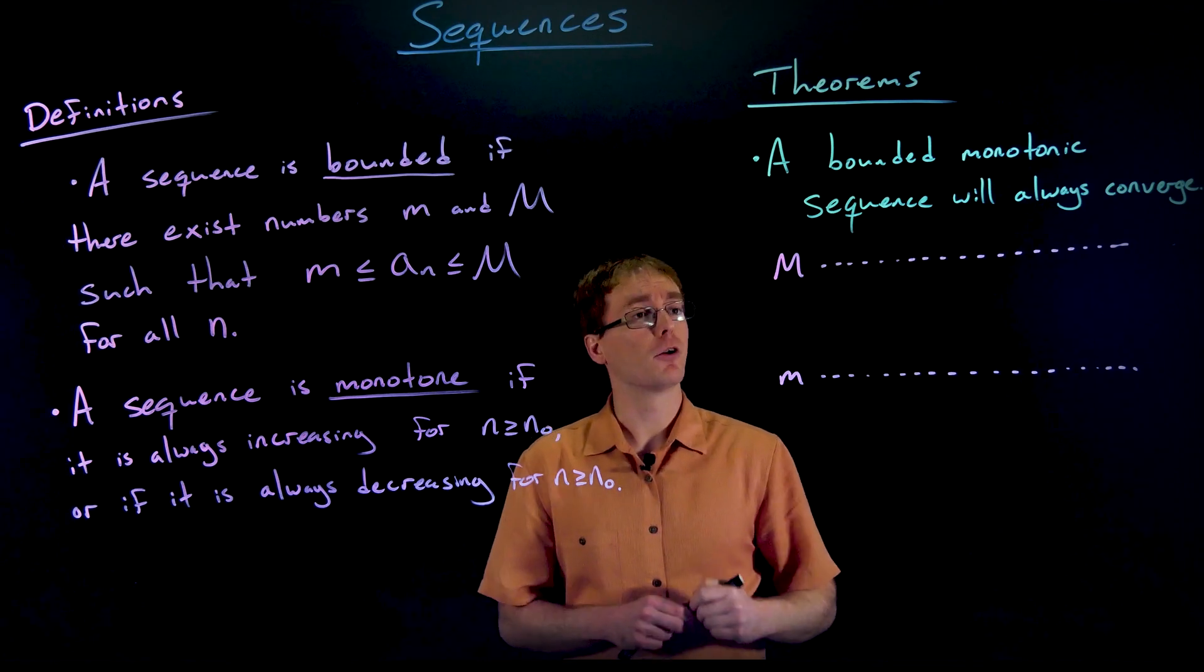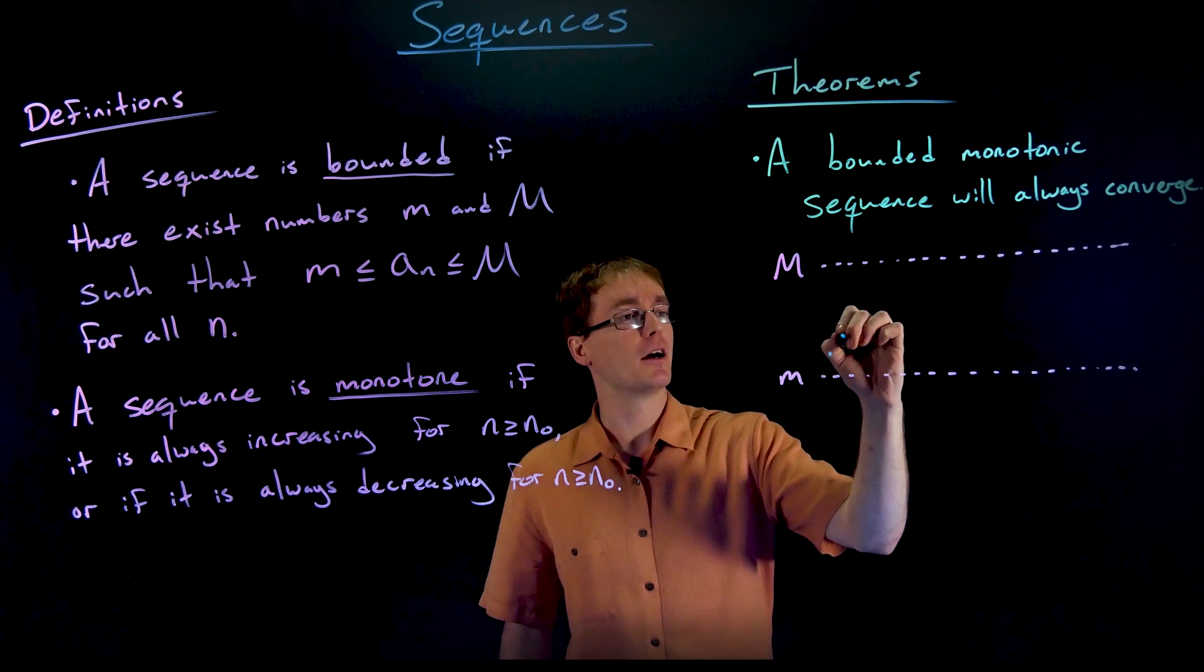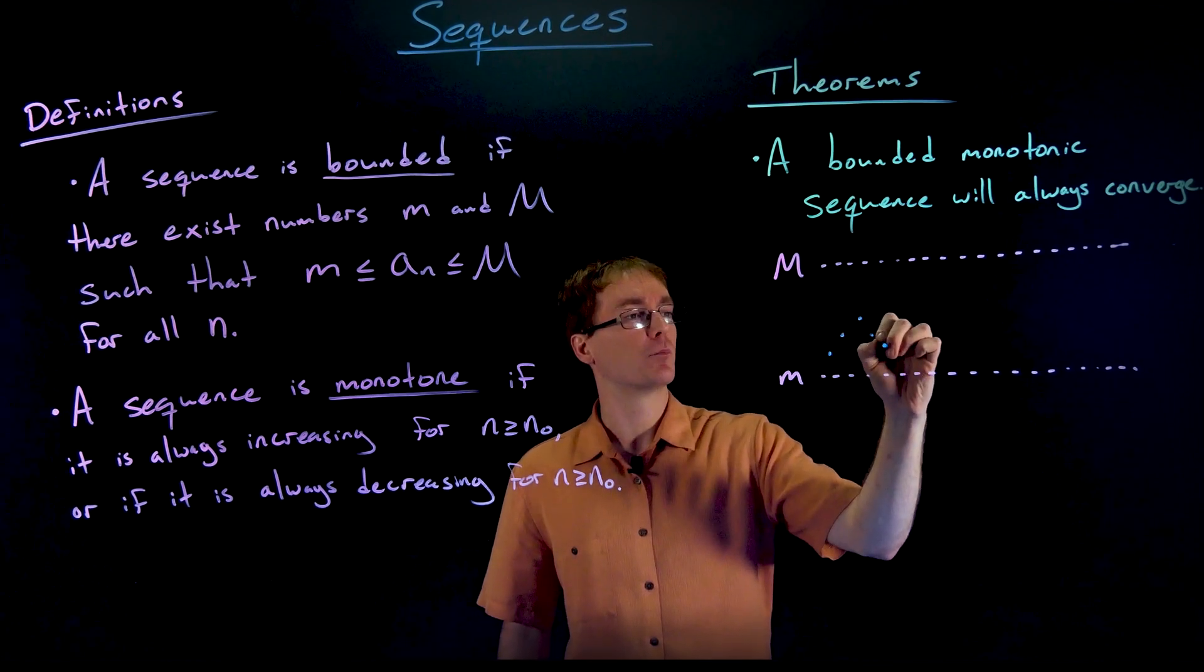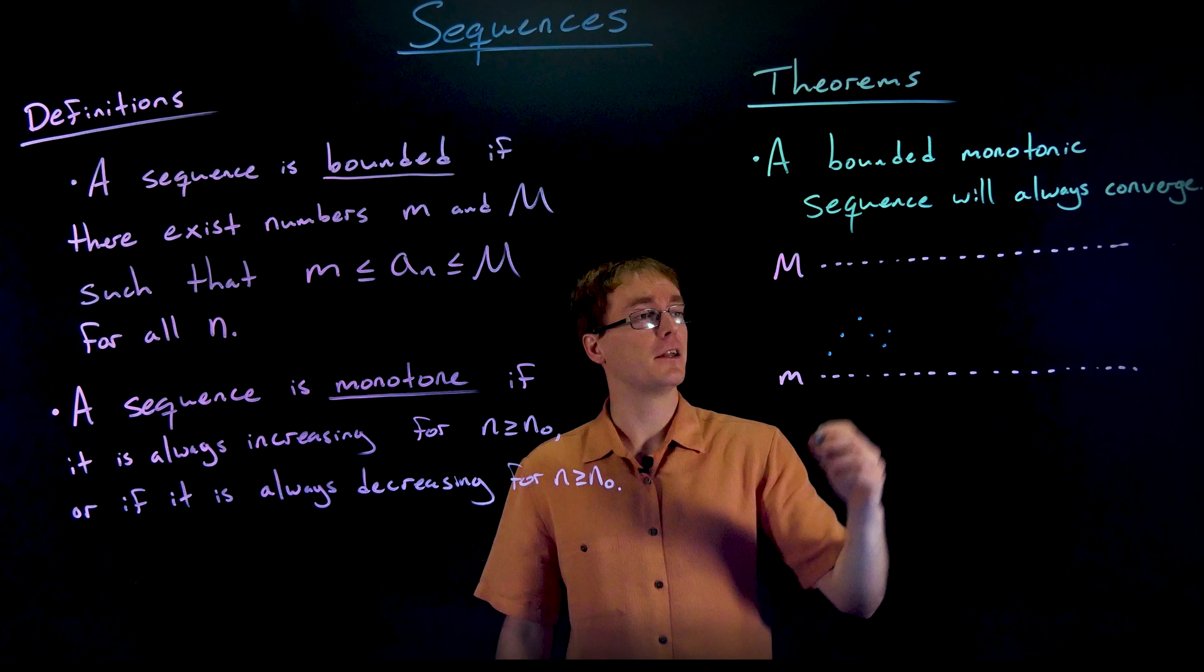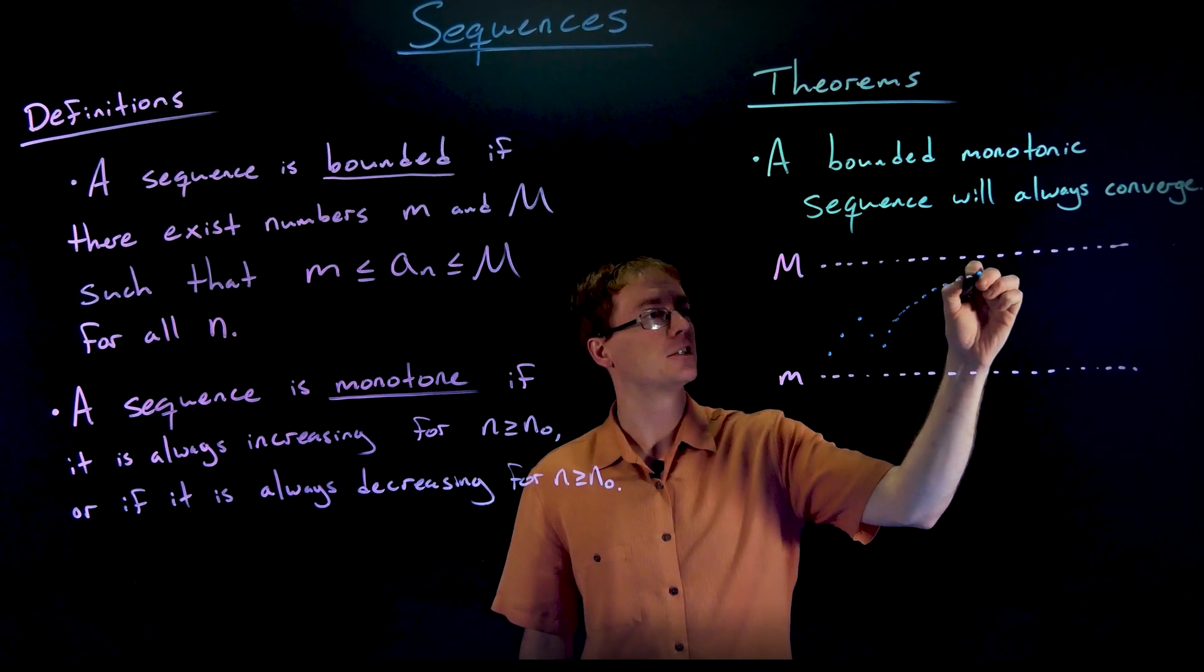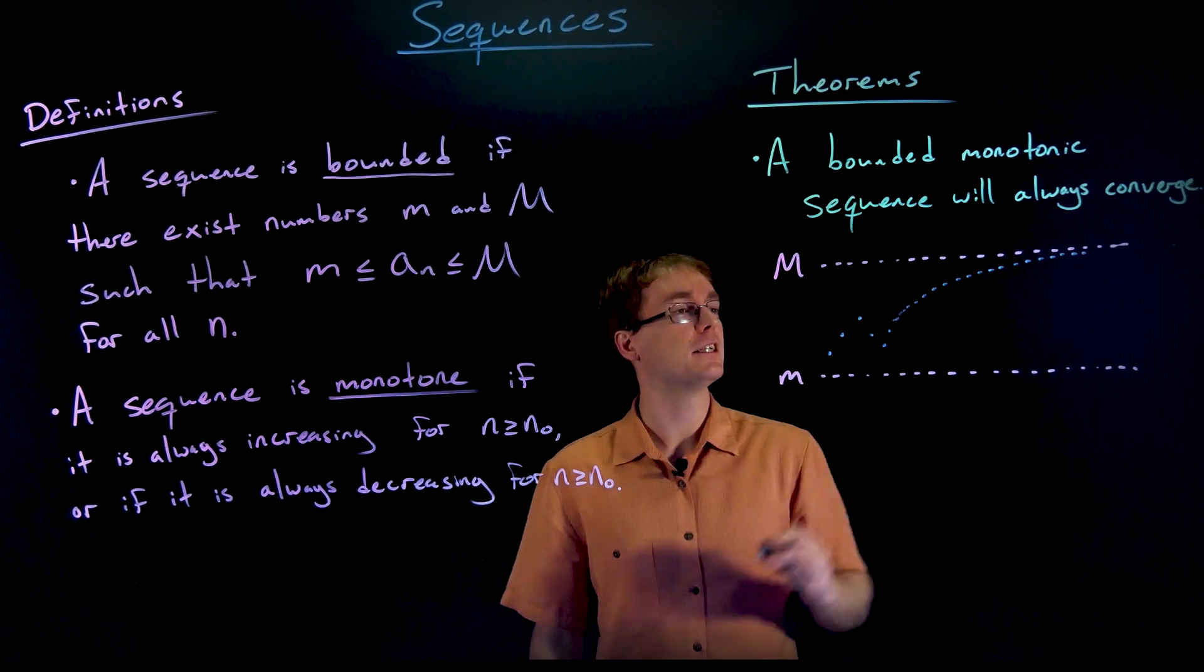But if we also know a sequence is monotonic, then we know maybe initially it has some weird behavior like it oscillates a little bit, but after a certain point it's either always going to be increasing or always be decreasing.